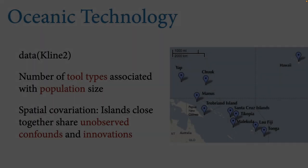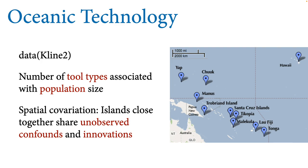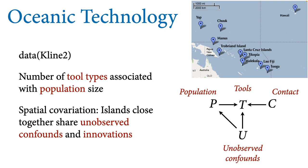We're going to return to the Oceanic technology dataset — there's a version called kline2 in the rethinking package with additional data tables. In this project we're interested in understanding how the number of tool types in a society is related to population size, because many models of the evolution of technology have population size as a big driver since it governs the innovation rate. The basic problem is that there are lots of other things that can also influence technology — for example, islands that are close together will share their technology and also share unobserved confounds like available raw materials.